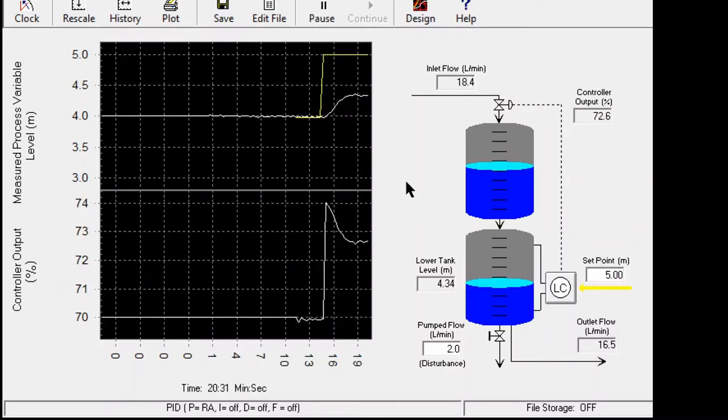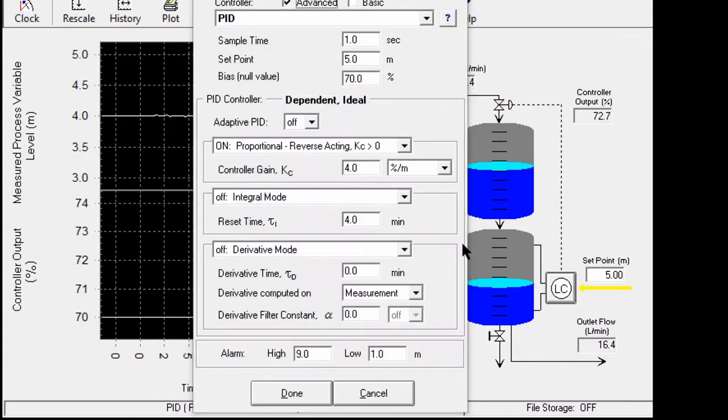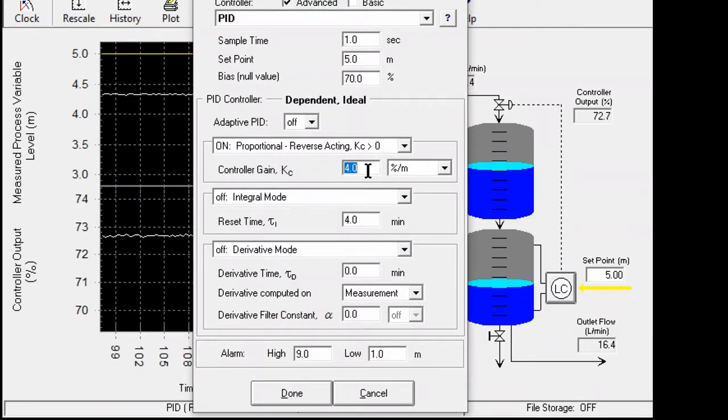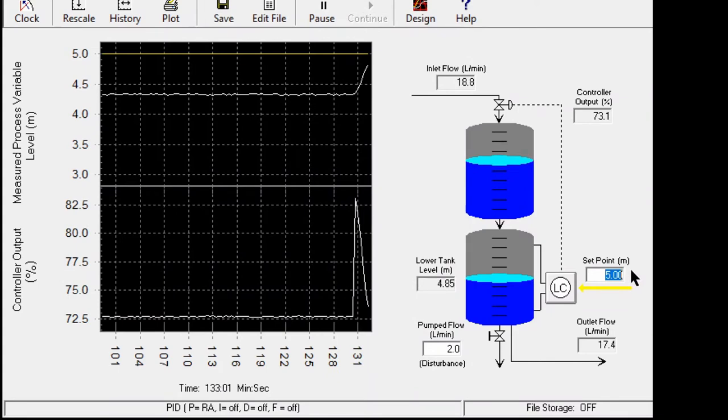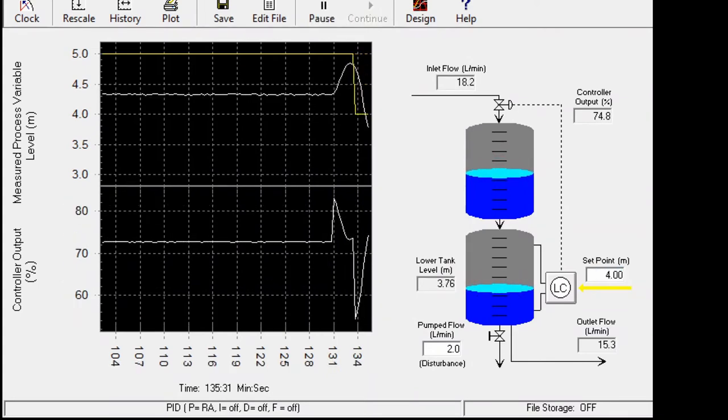You see that for this case we have quite stable response with an offset, so we'll have to increase the gain. Make it from 4 to 20 and let's see how it responds.